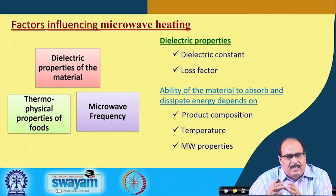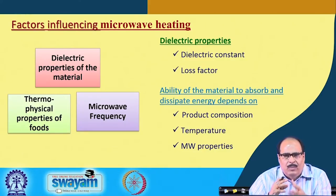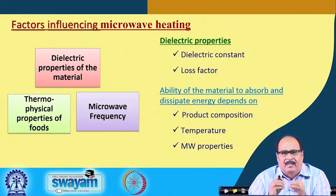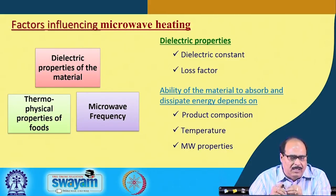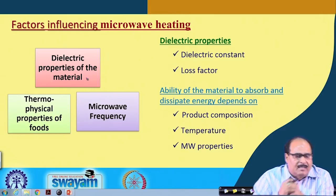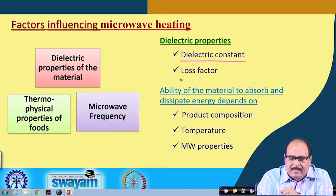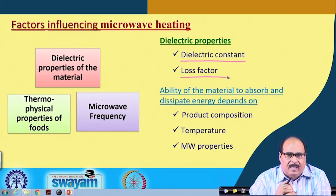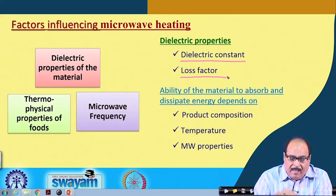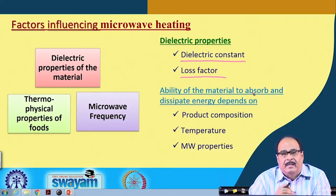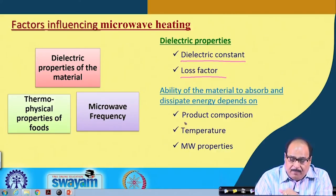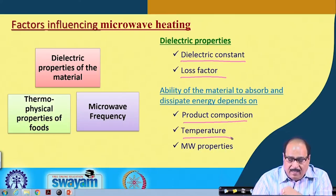The microwave heating process is influenced by certain factors: factors of the material, the environment, and others. Important factors include the dielectric properties of the material, thermophysical properties of the food, and frequency of the microwave used. Among dielectric properties, dielectric constant and loss factor are the important causative agents influencing microwave heating. The ability of the material to absorb and dissipate microwave energy depends upon the product composition, temperature, and microwave properties.